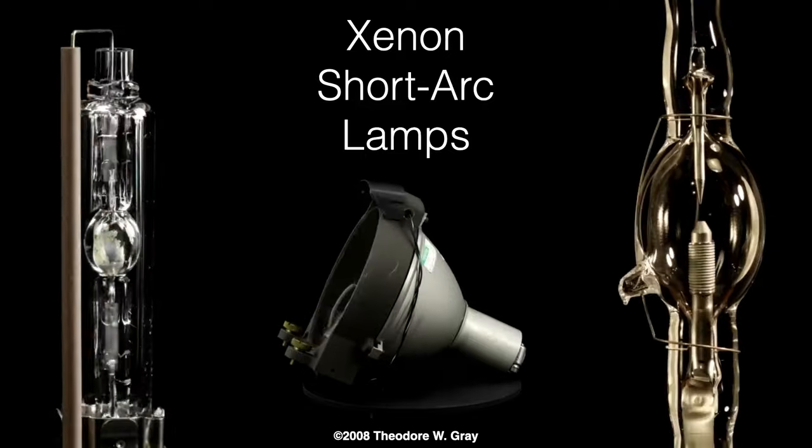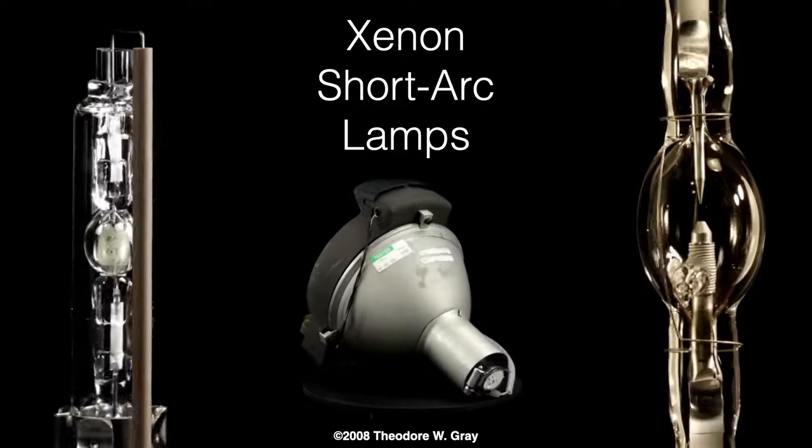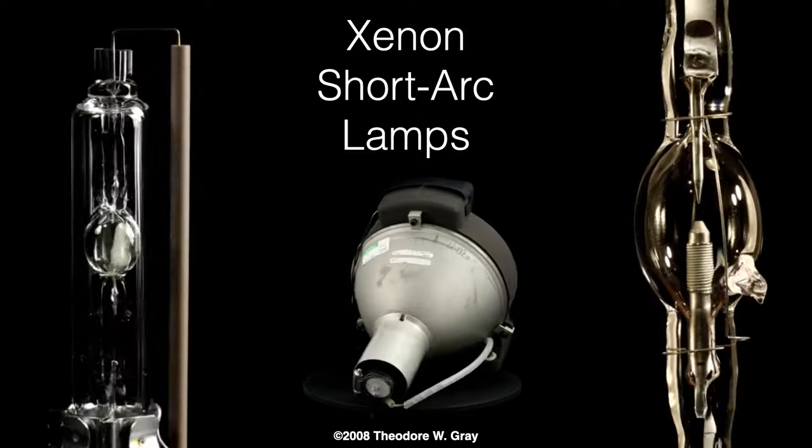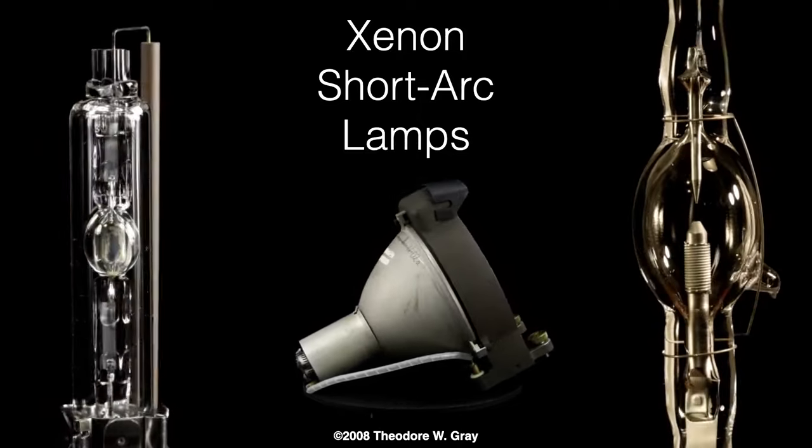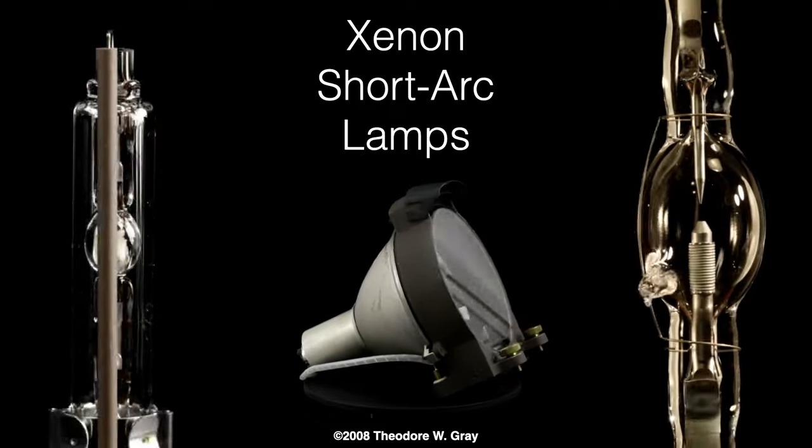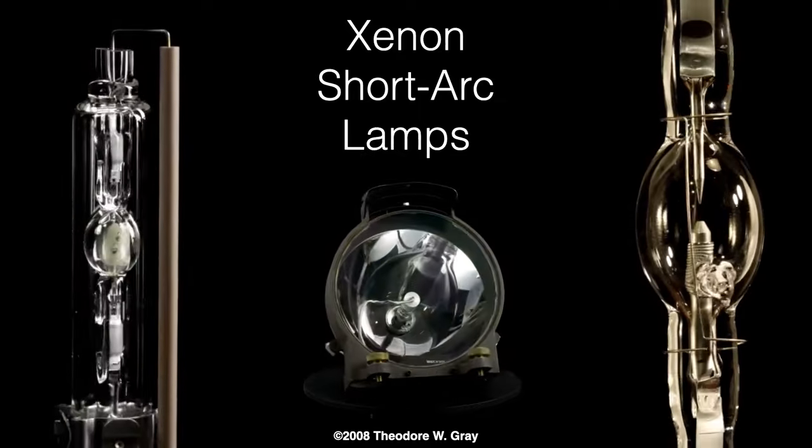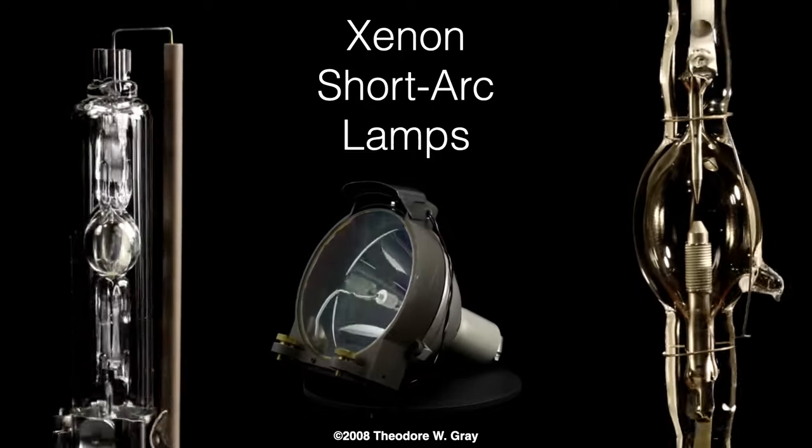Similar to the xenon strobe tubes, these lamps maintain a constant arc between their electrodes, providing a constant source of bright, daylight-like light. These are typically found in video projectors, like the lamp in the center, and theater film projectors, like the lamp on the right. The one on the left is an expensive automobile headlight, often called an HID, or High Intensity Discharge Lamp.